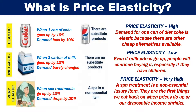Next, let's look at an example of where price elasticity is very high. A spa treatment is a non-essential luxury item. They are the first things we cut back on when prices go up, or our disposable income shrinks. So in this example, when spa treatments go up by 10%, demand for them drops by 20%.